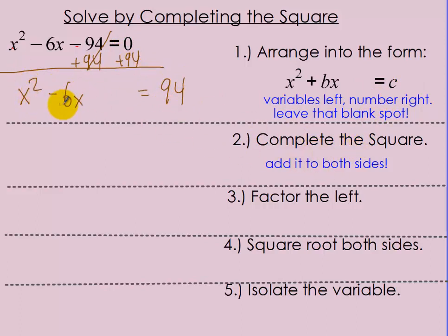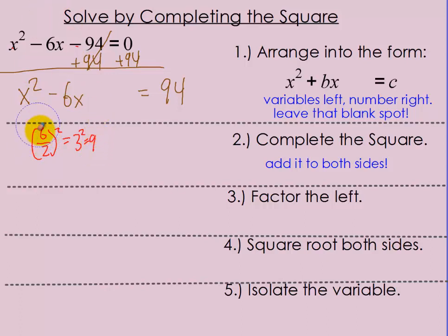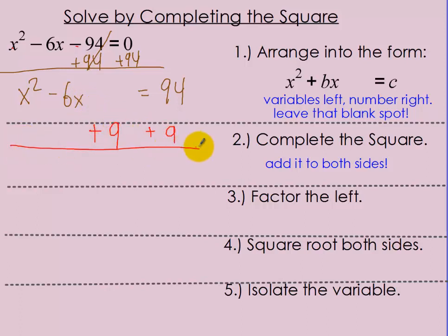Second step is to complete the square on the left-hand side. For x squared minus 6x, your b value is negative 6. Half of 6 is 3, and 3 squared is 9. So add 9 to both sides of the equation — you can't just add it to the left. What you're left with is x squared minus 6x plus 9 equals 94 plus 9, which is 103.